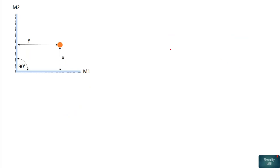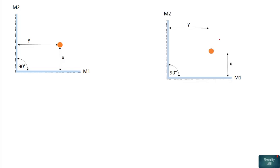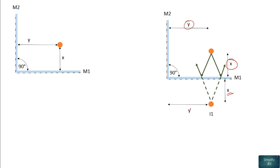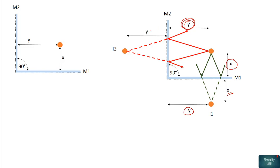Now let's discuss another case where the object is placed at a distance of X units from mirror M1 and Y units from mirror M2 — that is, placed unsymmetrically with respect to both mirrors. Forming an image from M1 mirror, we get image I1 at X units from M1 and Y units from M2. Forming an image from M2 mirror, we get image I2 at Y units from M2 and X units from M1.